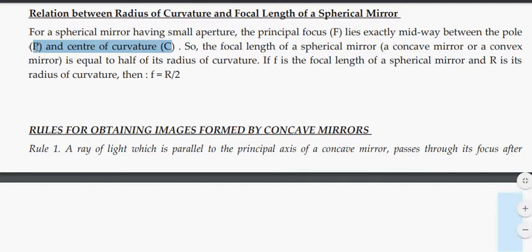We know that P and C distance is R, radius of curvature, and pole and focus distance is focal length. Therefore, focal length is equal to R by 2.